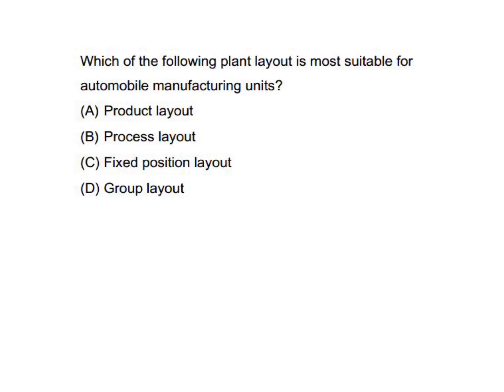Which of the following plant layouts is most suitable for automobile manufacturing units? The answer is product layout. In product layout, machines are placed according to the sequence of operations.